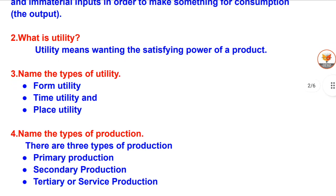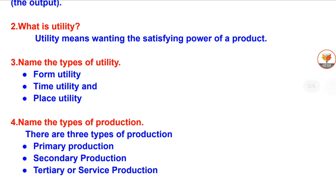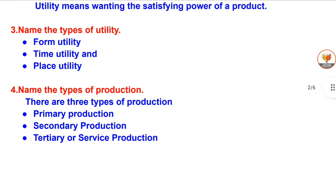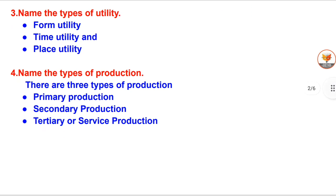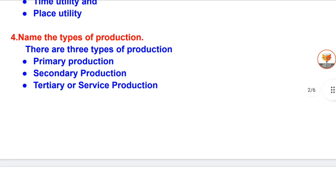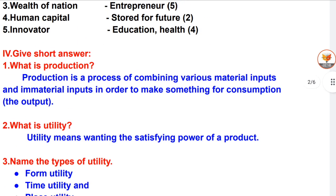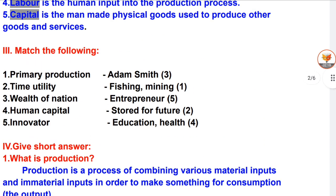Question 3: Name the types of utility. Form utility, time utility, and place utility. Question 4: Name the types of production. There are 3 types of production: primary production, secondary production, and tertiary or service production.